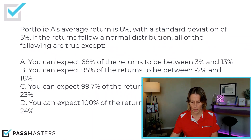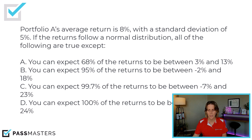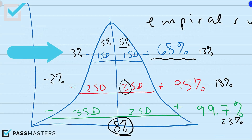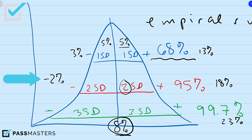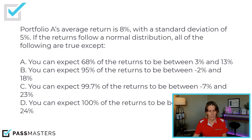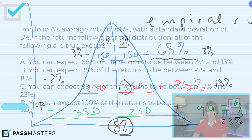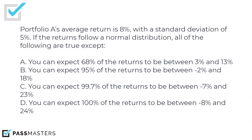We never know anything with 100% accuracy. So using that knowledge, we are now going to look for the false statements. Choice A: 68% of the time you can expect returns between 3% and 13% — that's true. Choice B: you can expect 95% of the returns to be between negative 2% and 18% — true. Choice C: you can expect 99.7% of the returns to be between negative 7% and 23% — correct. Which leaves D as the false statement: you can expect 100% of the returns to be between — no, we know nothing with 100% accuracy. So D is the correct answer because D is false.